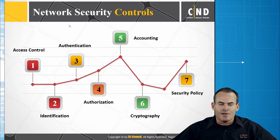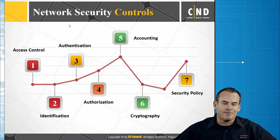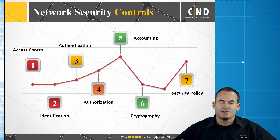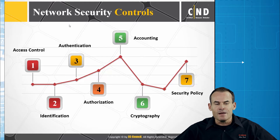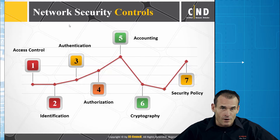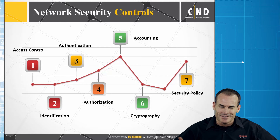In order to do that, we have to identify who the actual requester is — that's typically referred to as the subject. Once identification has taken place, we have to authenticate, or prove you are who you identified yourself to be. Once that has happened, we can determine what you are authorized to view. So we identify who you say you are, you prove it, and then we determine what you're allowed to do — that's where authorization comes in.